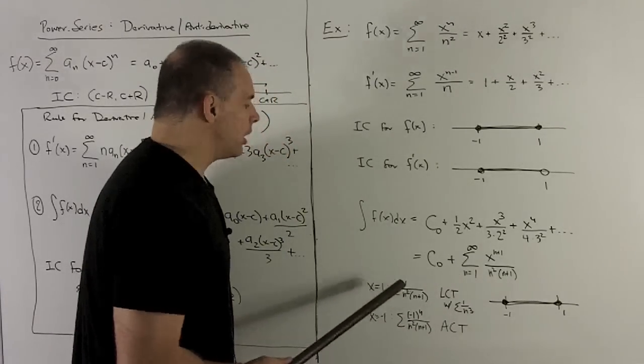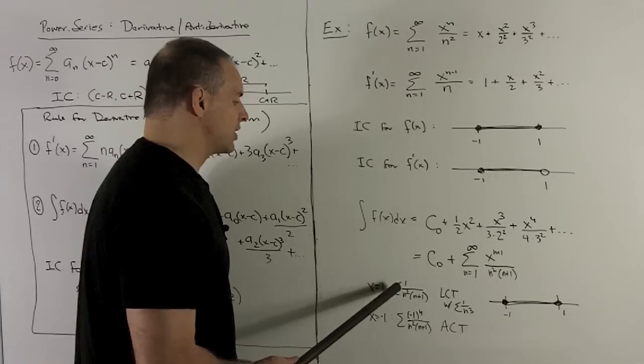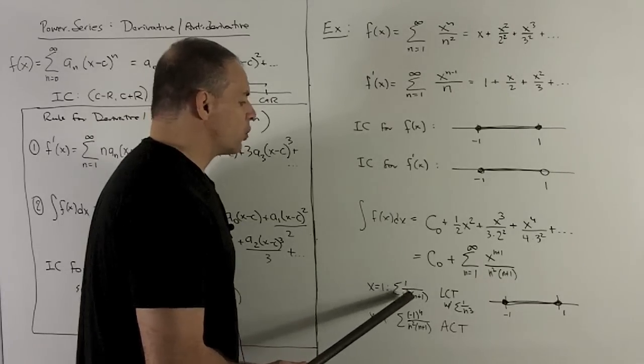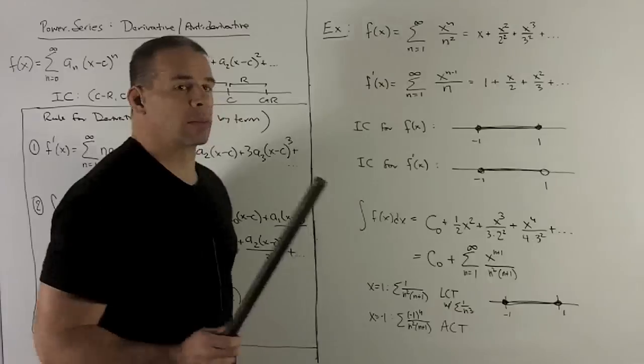If I put a one in here, what's going to happen? We're looking at the sum, one over n squared times n plus one. If you squint a little bit, that looks like one over n cubed.